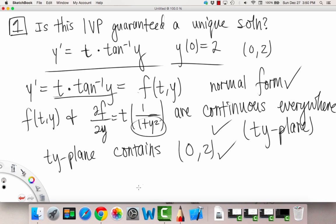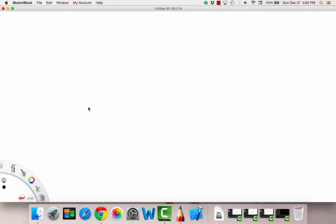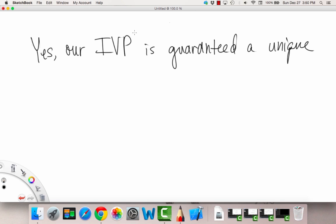So that means that the uniqueness theorem applies, and I'll write our conclusions on the next slide. So this means yes, our IVP, our initial value problem, is guaranteed a unique solution.